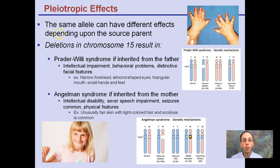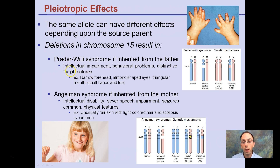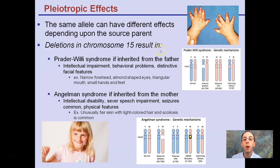Pleiotropic effects: some alleles can have different effects depending on which parent they come from. Deletions in chromosome 15, in particular, result in two potential types of syndromes — one if inherited from the father and one if inherited from the mother. Both outcomes are negative, but the specific effects you see determines which parent that particular mutation was inherited from.